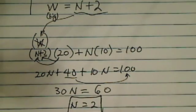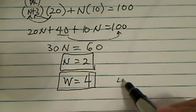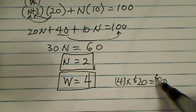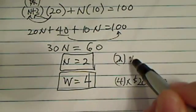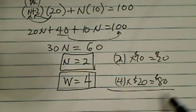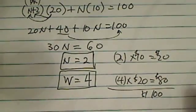If N equals 2, then W equals 4. Now let's check our work. Remember, W was the $20 bill. So 4 times $20 gives us $80. N was the $10 bill, that's 2 times $10, which is $20. Altogether we have $100.